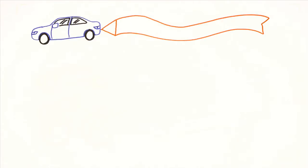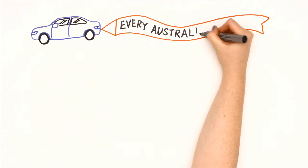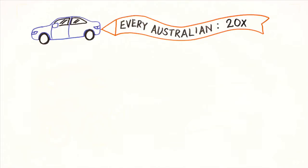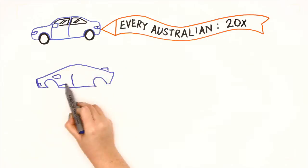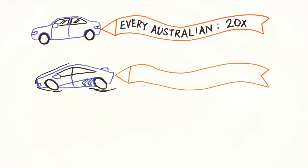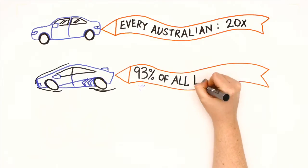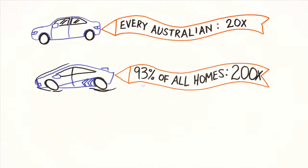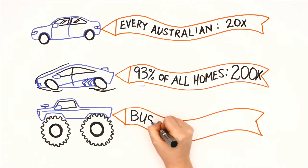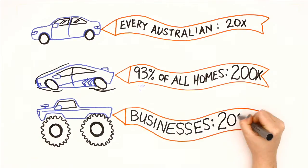Initially, NBN will deliver every Australian 20 times the speed for the same cost as the average DSL services today. But that's just the start. 93% of all homes can have 100 meg fiber. And businesses nationally will have access to one gig.